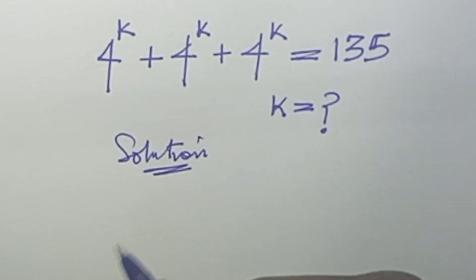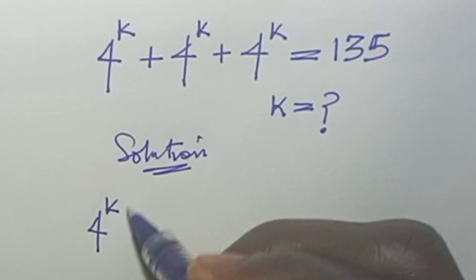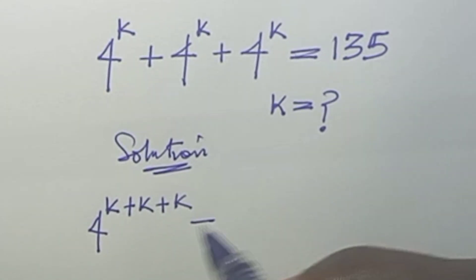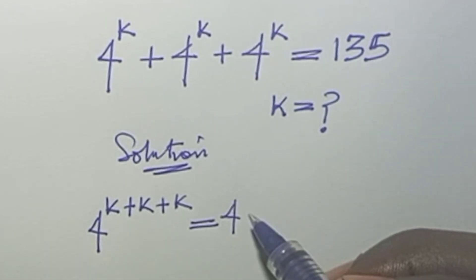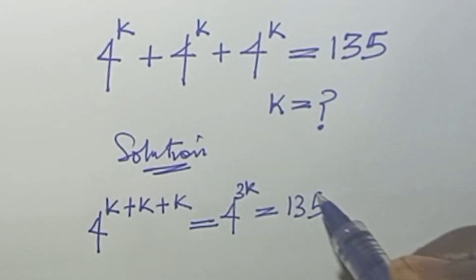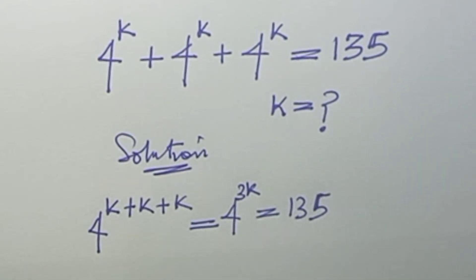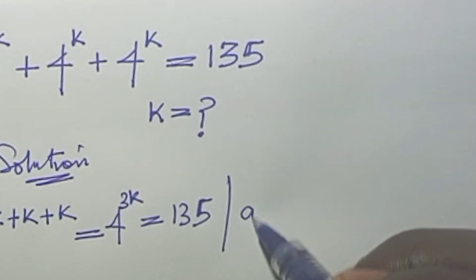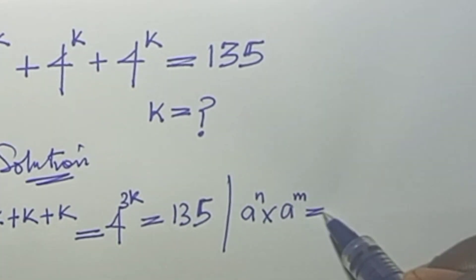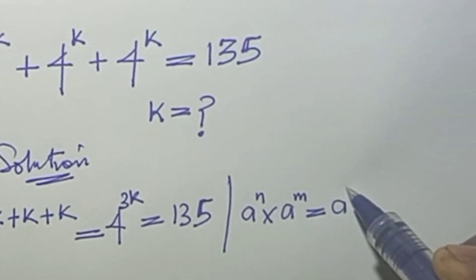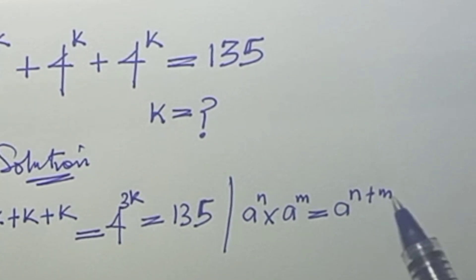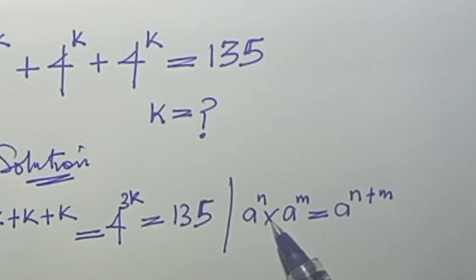From here, one might say 4 to the power of k plus k plus k, which equals 4 to the power of 3k, and set that equal to 135 — but this is not correct. The rule a to the power of n times a to the power of m equals a to the power of n plus m only applies when the operator between terms is multiplication, not addition.